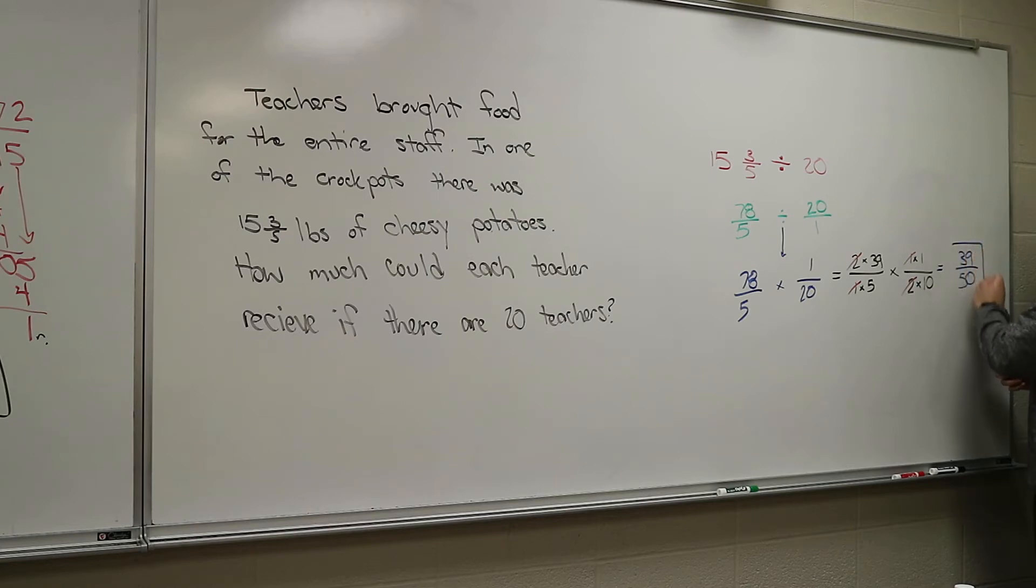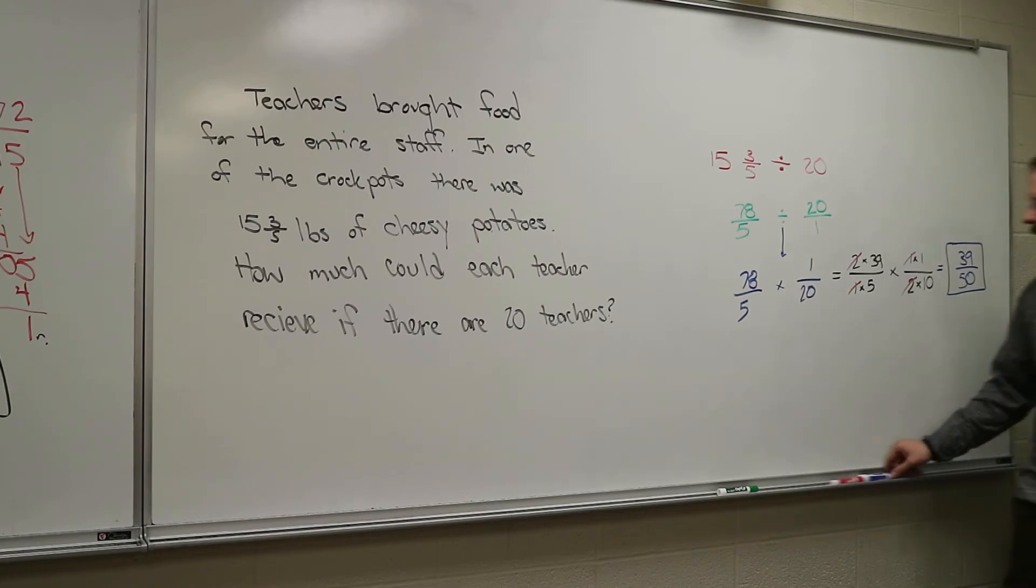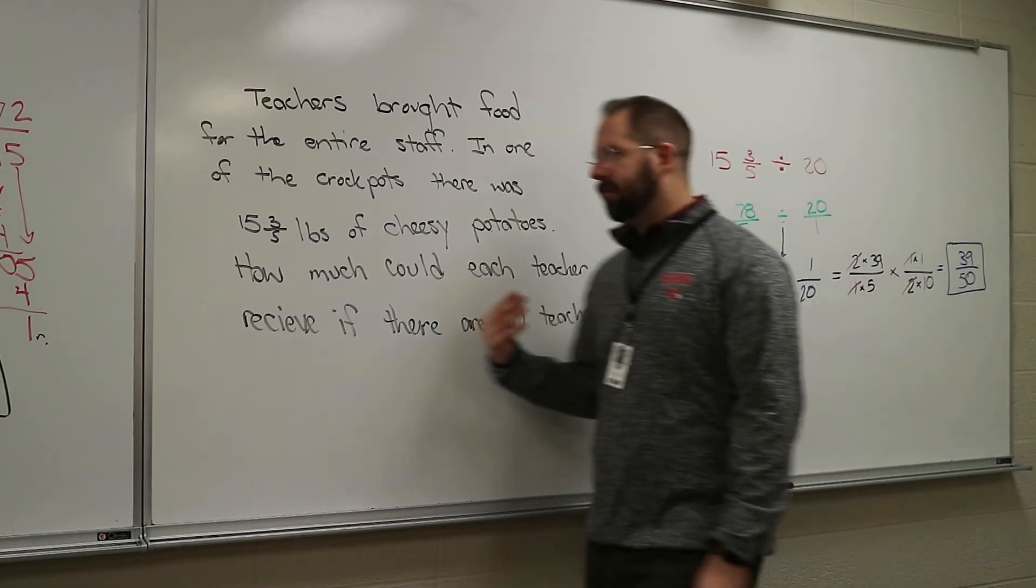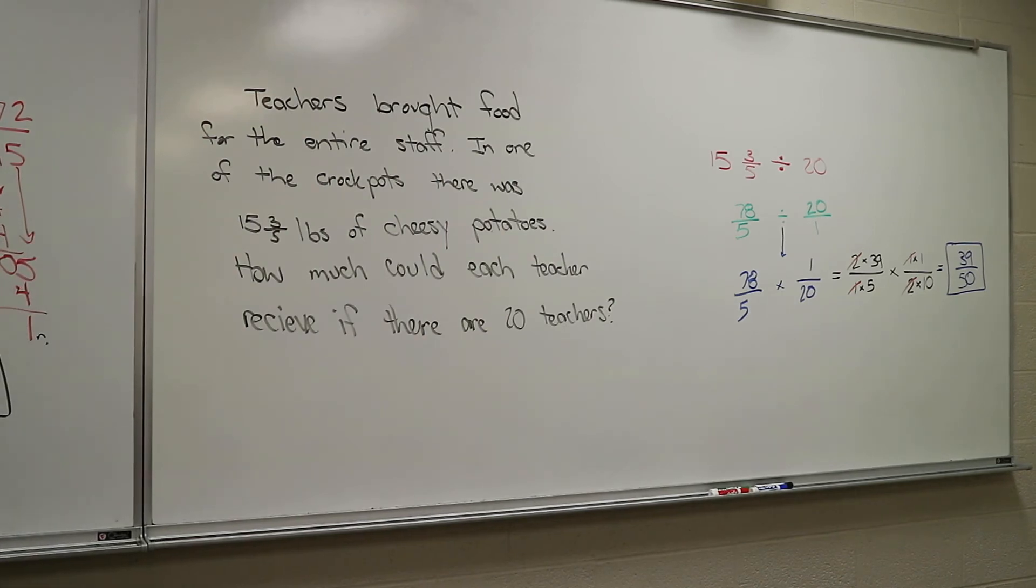But now we can go straight across. So what? 39 only has a 3 and a 13 in it. 50 has 5 and 10 so they don't have any numbers in common. So you could try. But yeah, we wouldn't have to convert. And again, what this is, this is the number of pounds each person will receive. So it's not quite a full pound. It's a little bit over half not a potato. But I'll leave that on the board. Again, you wouldn't have to convert because it didn't turn out to be improper.